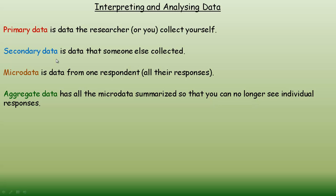Secondary data is data that someone else collected for you. You had someone go out and do a survey for you, or you got the results of a survey someone completed maybe a while ago, or you went online to a site like Statistics Canada and got some data that someone else collected. That's all secondary data.